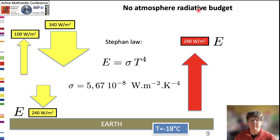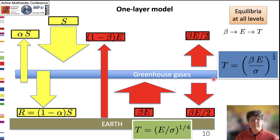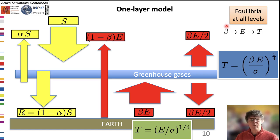We build a one-layer model in which a fraction beta of the infrared flux E emitted by Earth is absorbed by the greenhouse gases, which emit back half of it to Earth and the other half towards space. By prescribing the equilibria at all levels, the value of the fraction beta determines the values of the flux E and the temperatures.